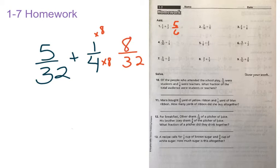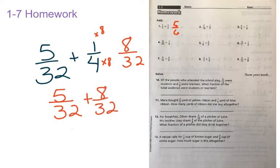8 times 1 is equal to 8. So now we have 5 32nds plus 8 32nds, and 5 plus 8 is equal to 13 32nds, and then we have 32nds for our denominator. So 13 over 32, 13 32nds.